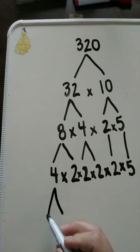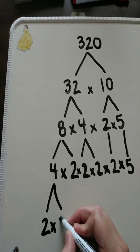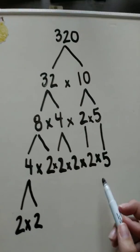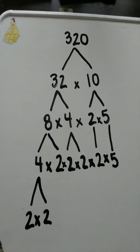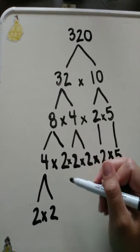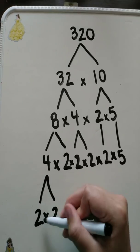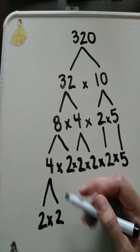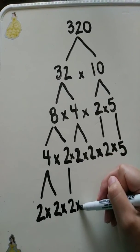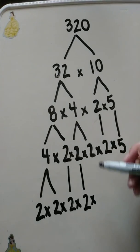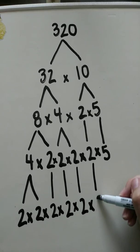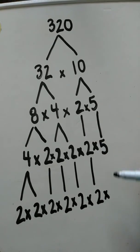Decomposing my 4 again: yes, it's 2 times 2. All these 2's are prime numbers, including the 5, but I still have to bring everything down to show the factor tree is completed properly. Going in order so I don't forget anything: bringing down each multiplication symbol, a 2, multiplication symbol, another 2, multiplication symbol, another 2, multiplication symbol, and a 5.